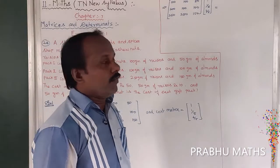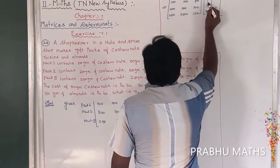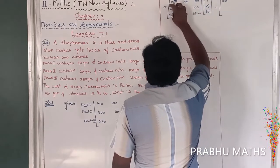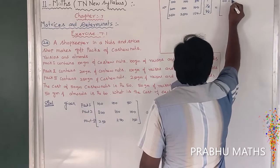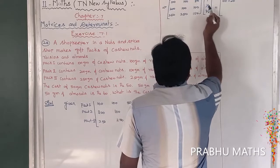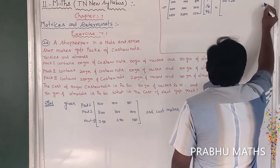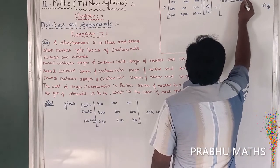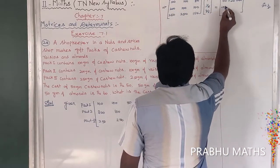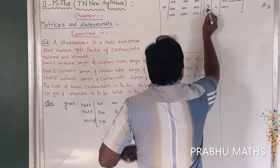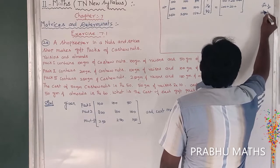For the first packet: 100 into 1 is 100, plus 100 into 1 by 5 is 20, plus 50 into 6 by 5 is 60. For the second packet: 200 into 1 is 200, plus 100 into 1 by 5 is 20, plus 100 into 6 by 5 is 120.